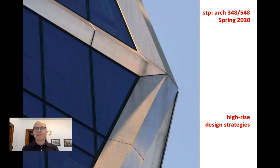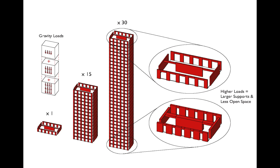We have certain ways of dealing with these problems, essentially wrapping efficient structures around efficient programs. The fundamental problems are twofold. We have gravity loads multiplied many times over, so columns get larger because they carry more floors and therefore more weight. That's manageable up to 10 stories, but as we reach 25 or 30 stories, we're not only carrying additional floor weight, but also the additional weight of the larger structure required to carry those floors.